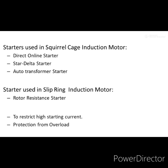In a slip ring induction motor, the circuit used is the rotor resistance starter. We use a starter circuit in order to restrict the high starting current. The initial current when we provide supply to the motor is very, very high. In order to restrict that initial current, we use a starter circuit so that the windings of the motor can be protected. There is also a provision to protect the motor from overload conditions.